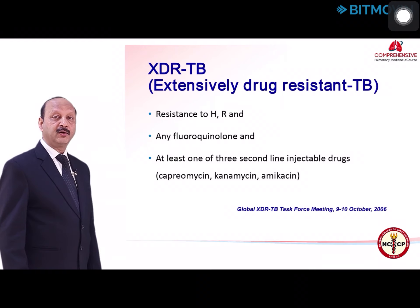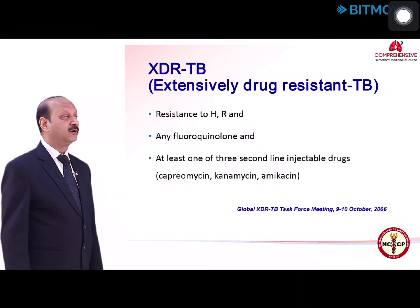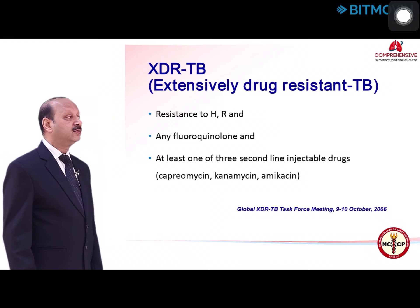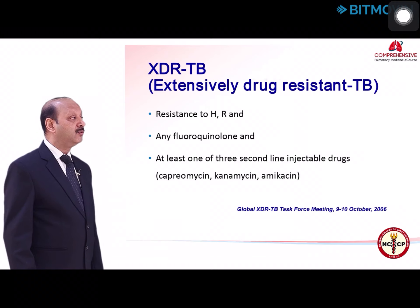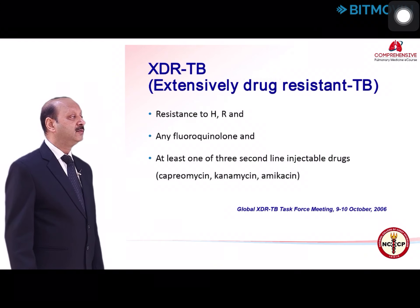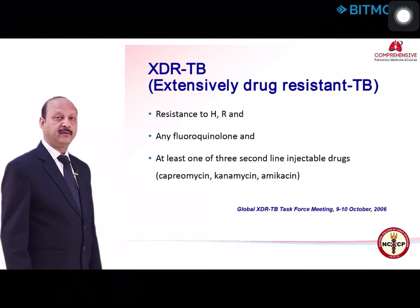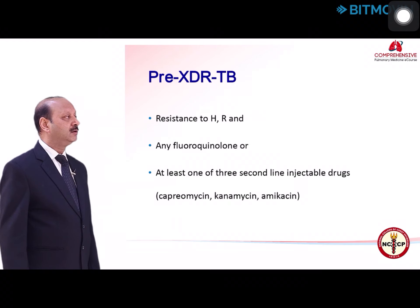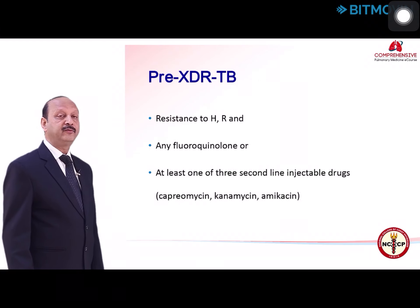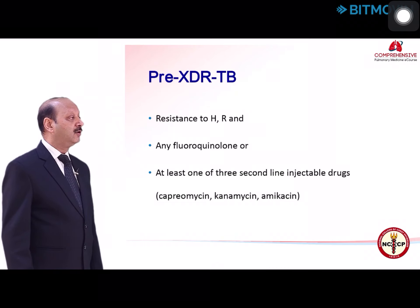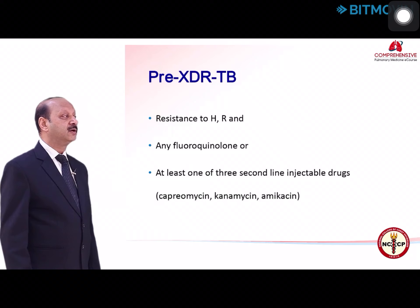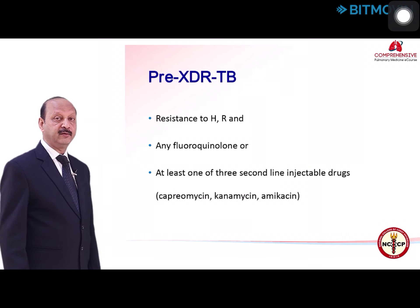XDR tuberculosis — extensively drug-resistant tuberculosis — includes cases with resistance to INH and rifampicin, any of the fluoroquinolones, and at least one of the three second-line injectables: capreomycin, kanamycin, and amikacin. Streptomycin is not included in the list of second-line injectables. Pre-XDR tuberculosis includes resistance to INH and rifampicin and either any of the fluoroquinolones or at least one of the three second-line injectables: capreomycin, kanamycin, or amikacin.